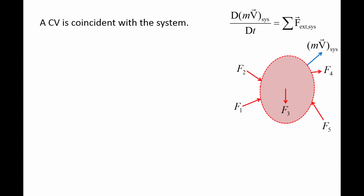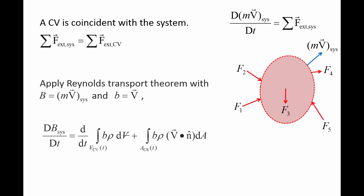Let's say a control volume is coincident with the system at this moment in time. The control surface surrounds the control volume and is marked by the red dashed lines. At this time, the external forces on the system are the same as the external forces on the control volume because they happen to occupy the same region of space. We now apply the Reynolds transport theorem with the linear momentum as the extensive property capital B, and the velocity as the corresponding intensive quantity lowercase b.